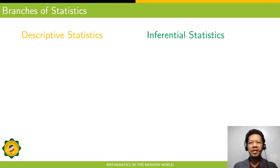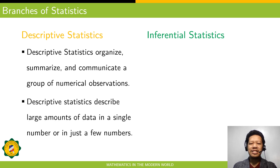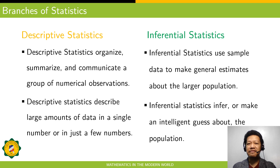Let us now proceed to the two branches of statistics: descriptive and inferential statistics. Descriptive statistics organize, summarize, and communicate a group of numerical observations. It describes large amounts of data in a single number or in just a few numbers. While inferential statistics use sample data to make general estimates about the larger population, inferring or making an intelligent generalization about the whole population.